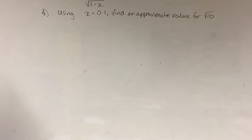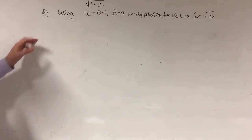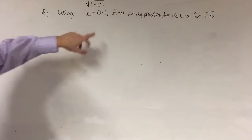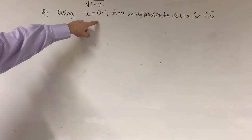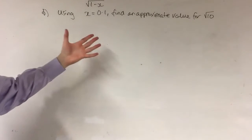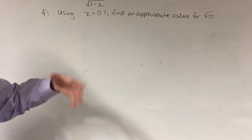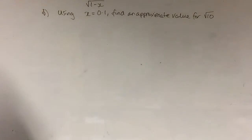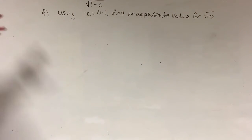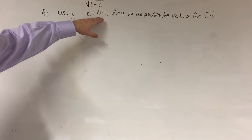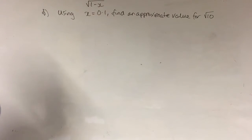The first thing we need to do to solve a question like this is expand this, then we'll swap in this value of x equals 0.1. It won't be obvious, but if we manipulate it long enough, we'll end up with the square root of 10 equal to something. They'll tell you what that value is — they're not expecting you to make up your own value there.